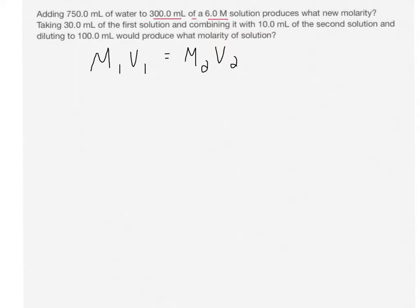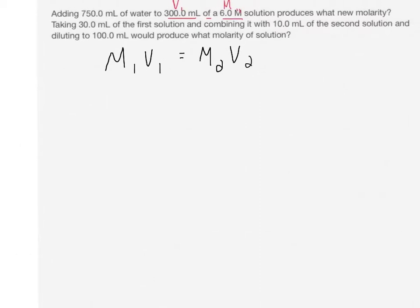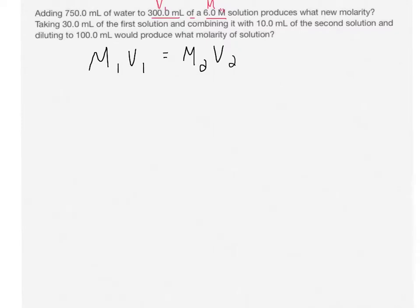Now in this particular problem you'll notice that the value 300 mL and 6 molar is separated by of. That is a clue that these two values need to go together. So we could assign this our V1, we could assign this our M1. That means that the other value will need to be added to the 300 mL. So our new volume, our V2 value is going to be 750 plus 300, which is going to give us 1,050 mL.